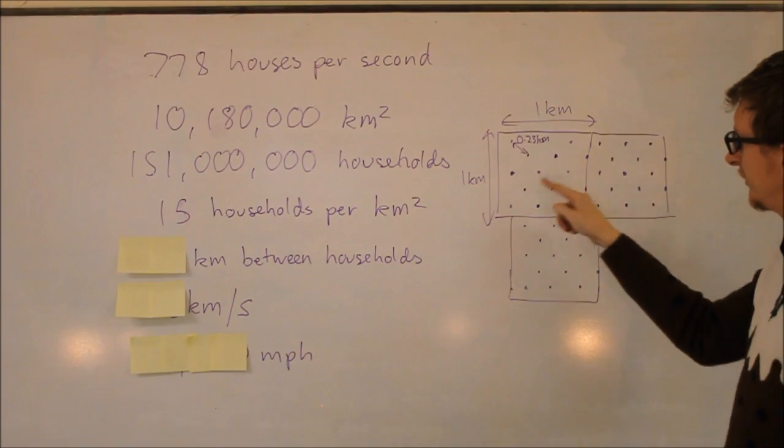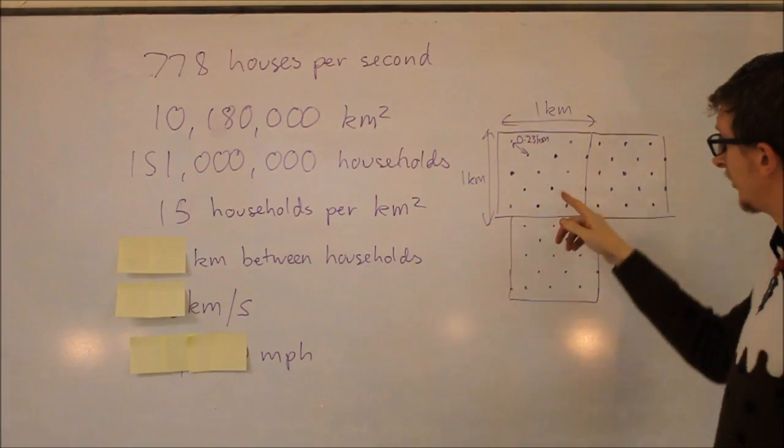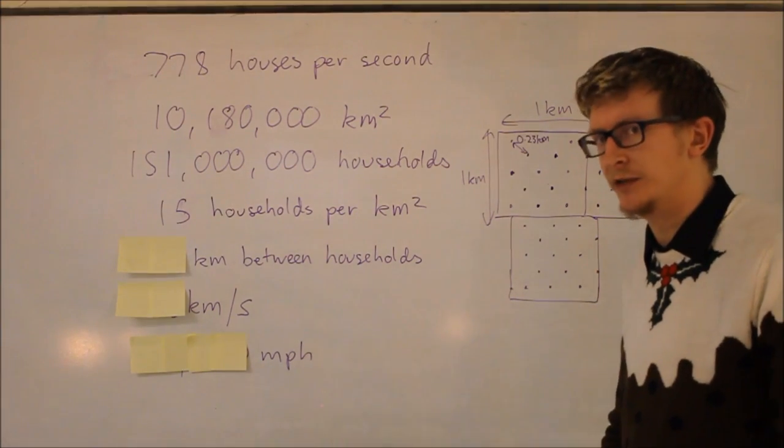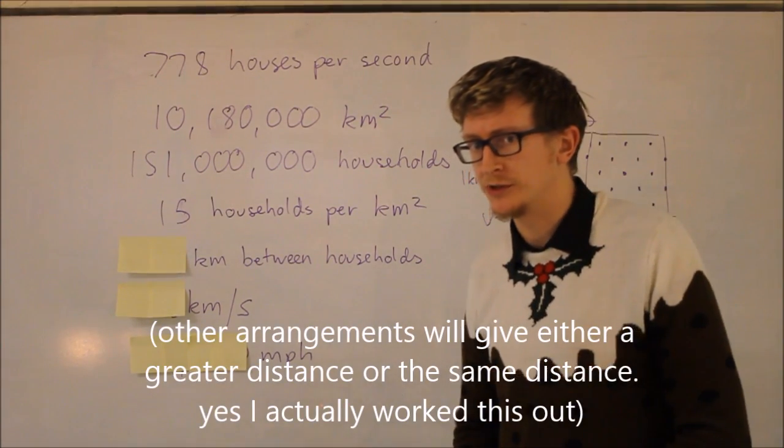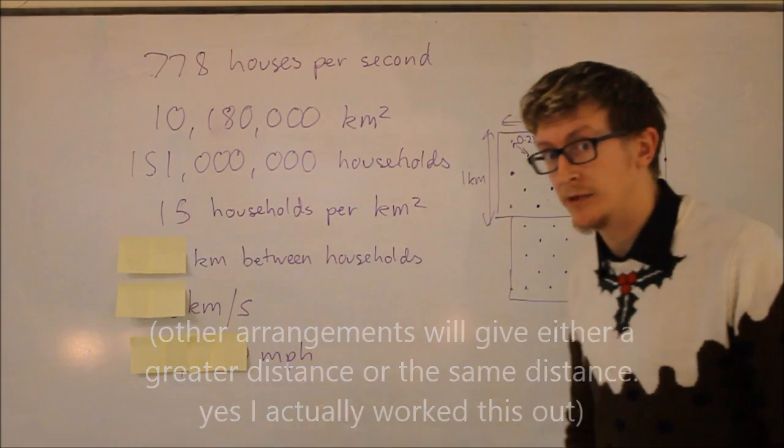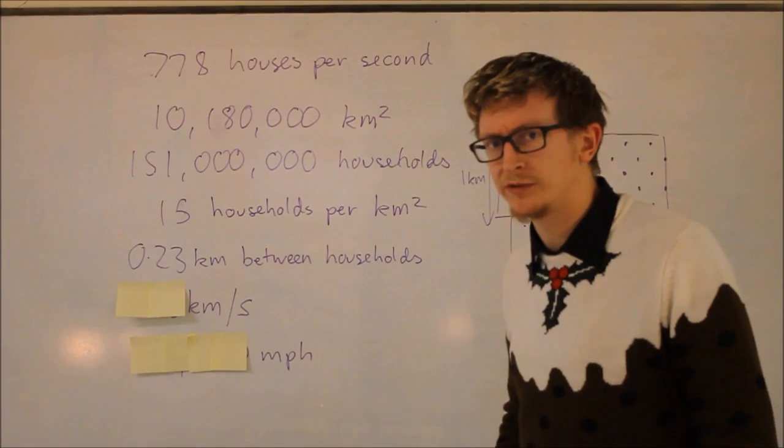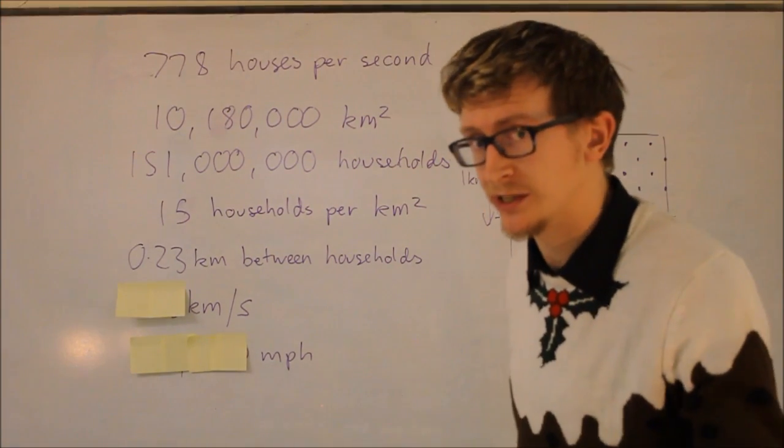The optimum arrangement for 15 households per km² is this arrangement here, where we have 1, 2, 3, 4, 5, 6, 7, 8, 9, 10, 11, 12, 13, 14, 15 in a pattern that repeats per km². That is the best estimate for how far between households there is. If you do the maths, you will find that this is 0.23 km between households as an average distance.